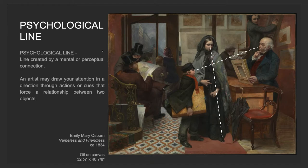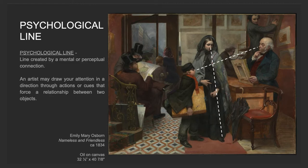Another definition: psychological line. A psychological line is created by a mental or perceptual connection. An artist may draw your attention in a direction through actions or cues that force a relationship between two objects. In this painting, there are many psychological lines happening. We have this woman looking at her shoe — she's embarrassed, it looks like. That boy is staring right at that man, and that man is looking at a painting. This guy is looking at what that guy is looking at. These are psychological lines — two separate objects within a painting where your brain is forced to consider the relationship between the two objects.